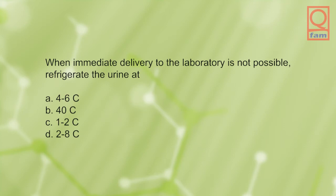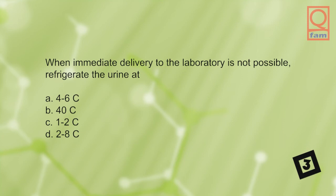When immediate delivery to the laboratory is not possible, refrigerate the urine at: A) 4 to 6 degrees Celsius, B) 40 degrees Celsius, C) 1 to 2 degrees Celsius, D) 2 to 8 degrees Celsius. The answer is D, 2 to 8 degrees Celsius.